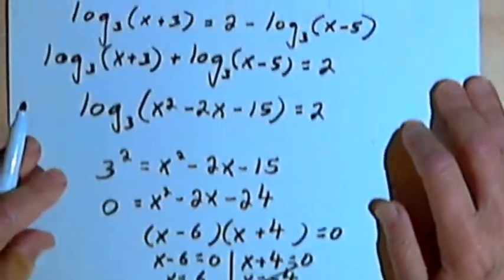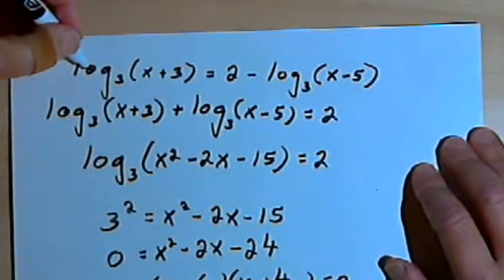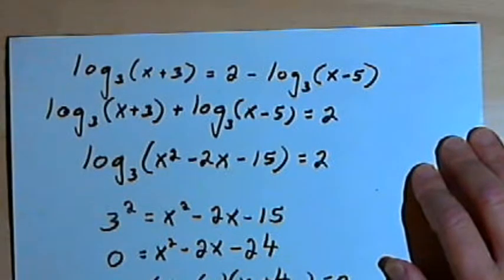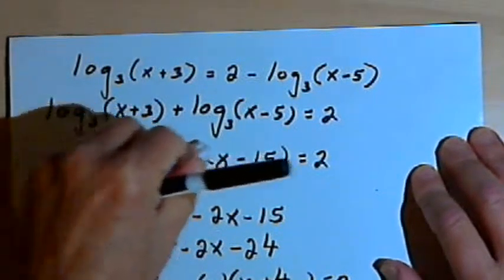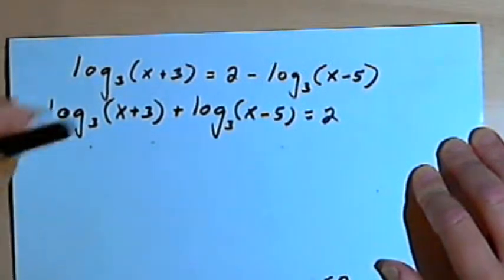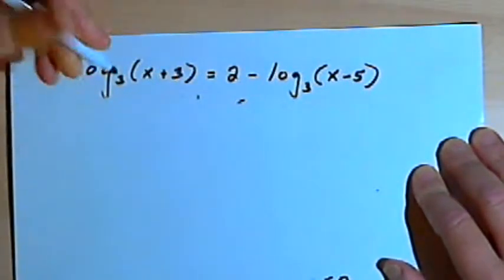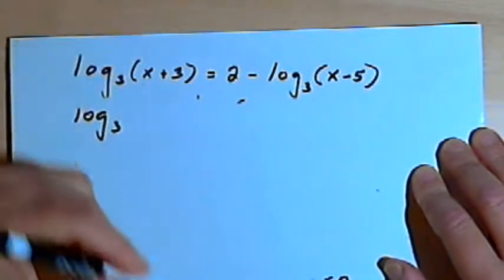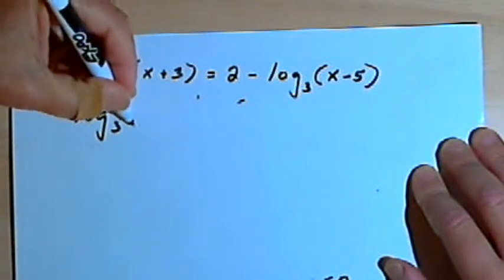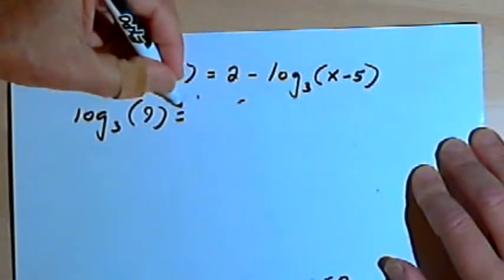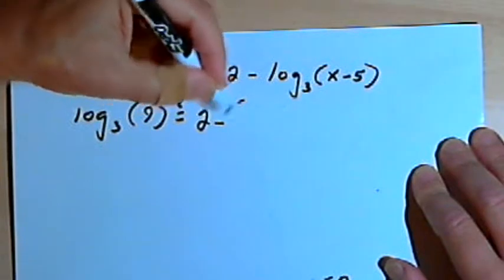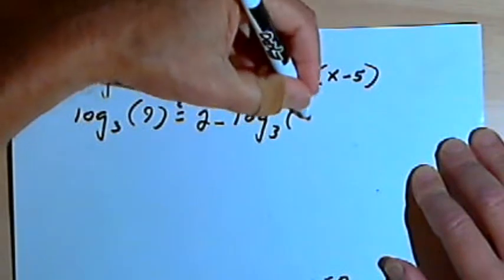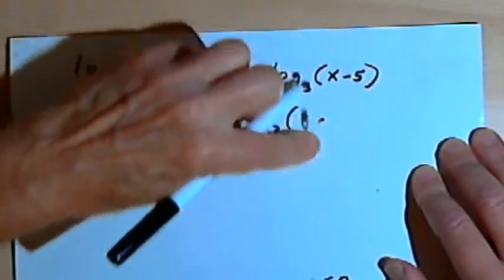What about x equals 6? Let's see what that would do. That would take this log base 3 of x plus 3 and turn that into, actually, let me just erase some of this and we'll see how that works. So that's going to turn that into the log base 3 of 6 plus 3 is 9. And we want to see if that equals 2 minus the log base 3 of 6 minus 5. 6 minus 5 is 1.